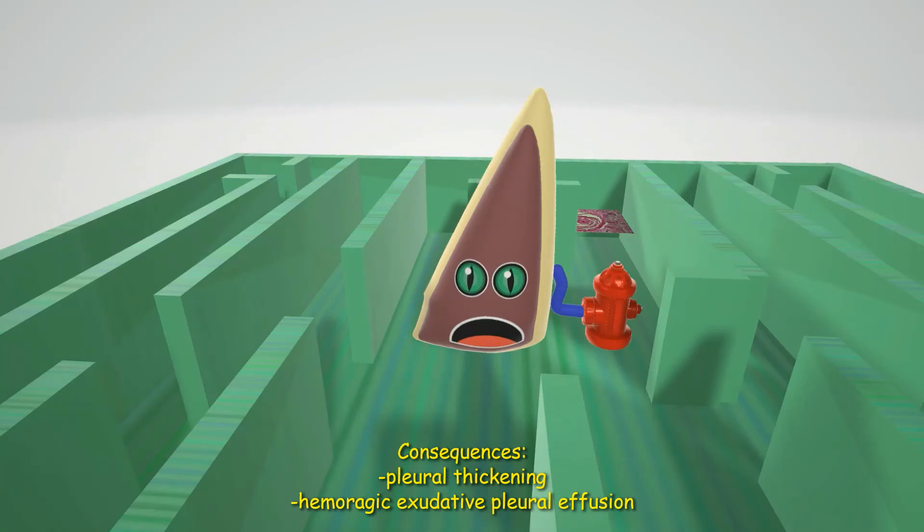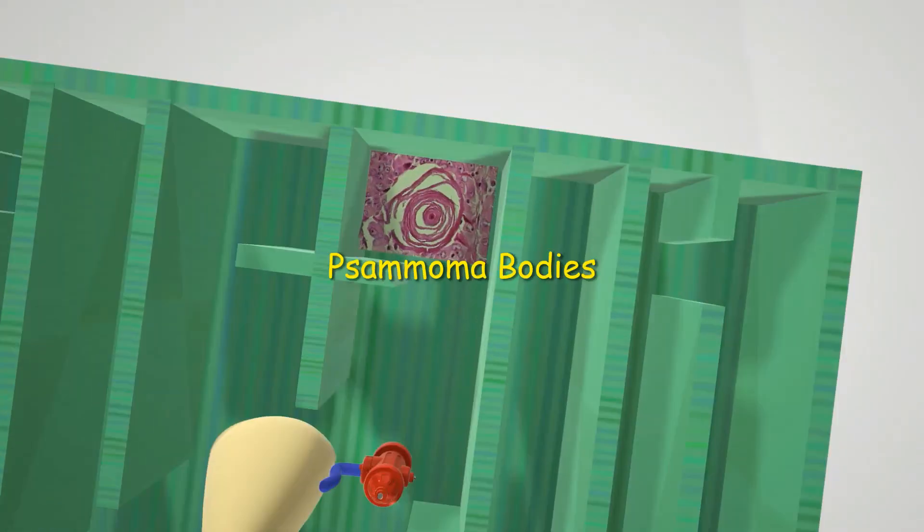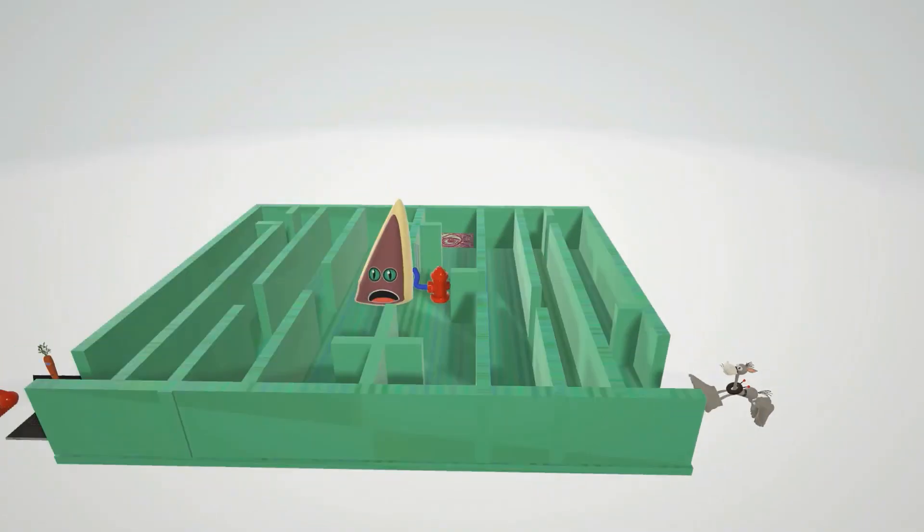We randomly see the psammoma body in the middle of the maze to help us remember that psammoma bodies are seen on histology in mesothelioma. I hope you enjoyed this scene on mesothelioma. Take care.